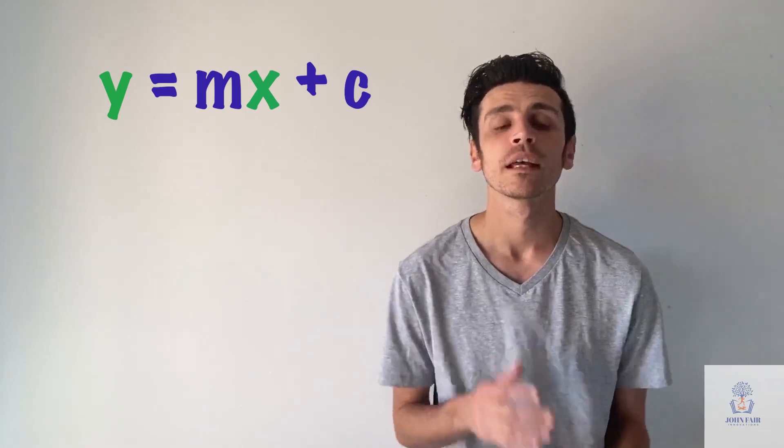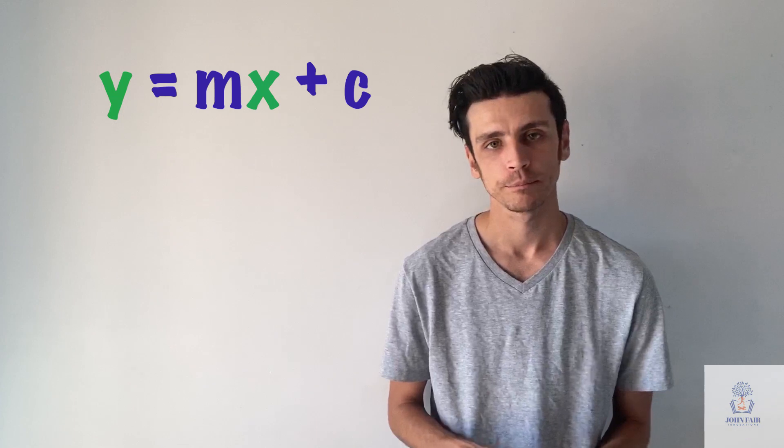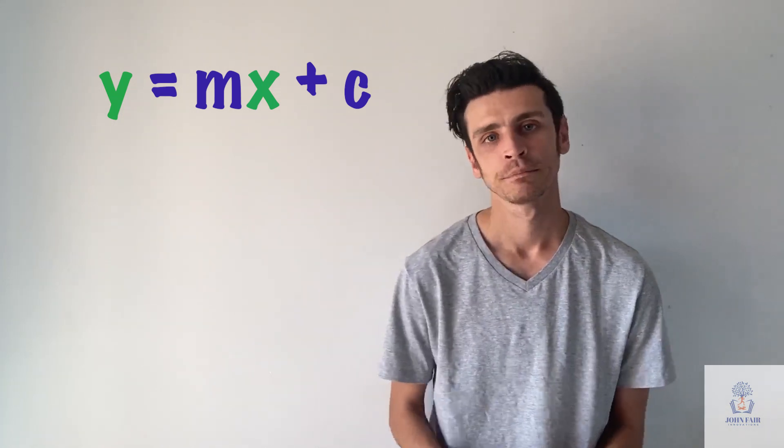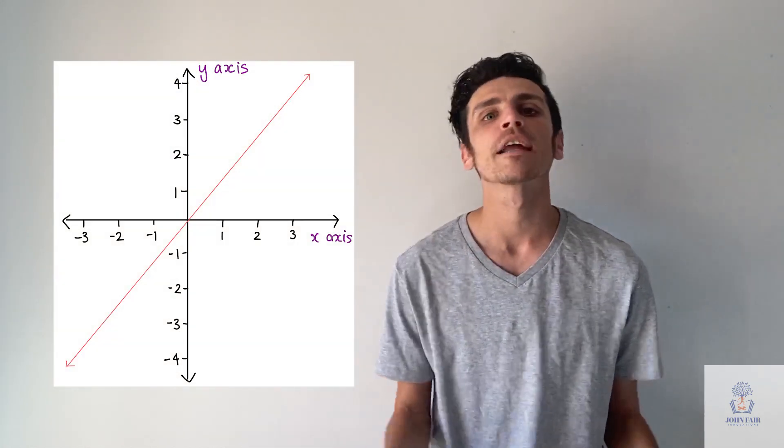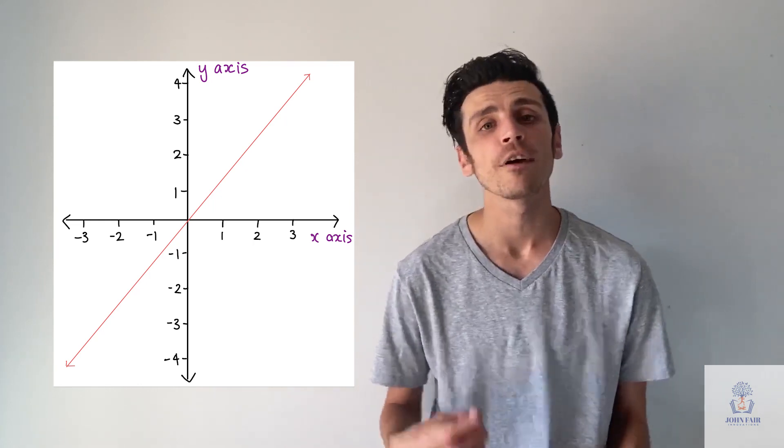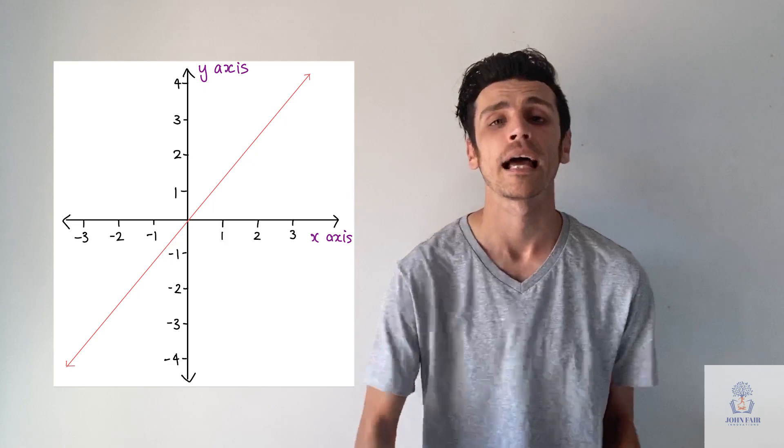Now these are called independent and dependent variables, and I'll go through which one is which. And what we mean by a variable is a number that can change. So if you look at your graph for example, you can see the line goes on forever in both the negative and the positive direction. So your value for x and your value for y is going to constantly change depending on where you're looking at your line.